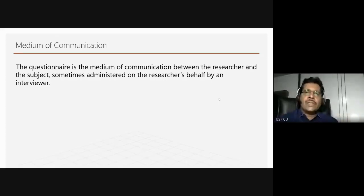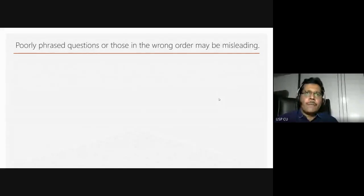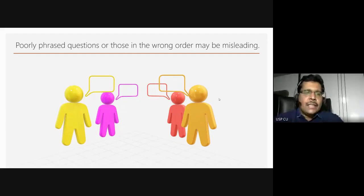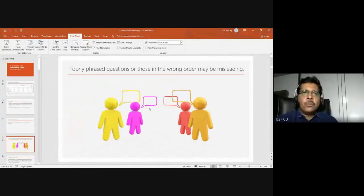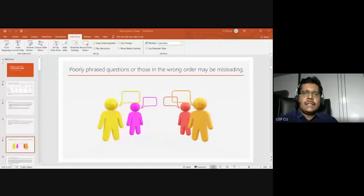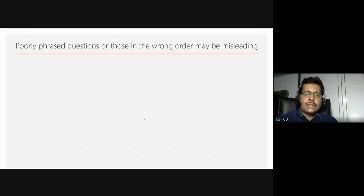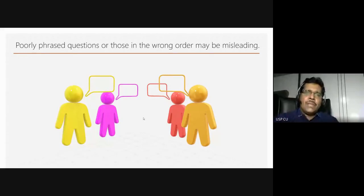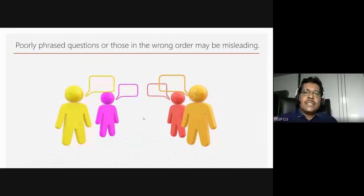A questionnaire is basically the medium of communication between the researcher and the subject. At times it is administered on the researcher's behalf by an interviewer — your field worker sitting with that interview schedule — but even then it is the medium of communication between the researcher and the subject. Questionnaires which are poorly phrased, or where the order is wrong, will be extremely misleading. If your instrument itself is faulty, you will get wrong results, so it's important that the survey instrument is devised very scientifically.